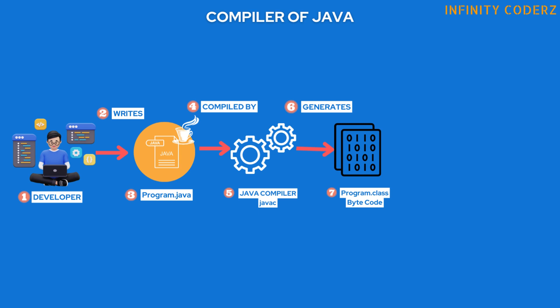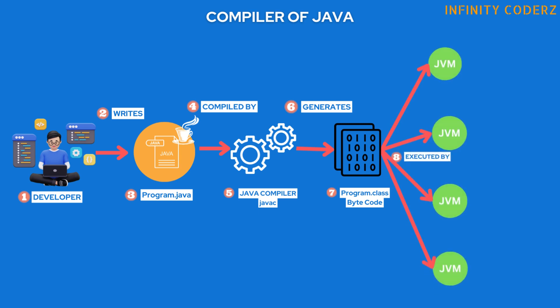The bytecode is saved in class files. The Java Virtual Machine (JVM) verifies the bytecode to ensure its safety and integrity. It checks for any violations of Java's security rules and performs various checks to prevent malicious code from executing. The JVM then executes the compiled Java program — it loads the bytecode into memory, interprets or executes the instructions, manages memory, performs garbage collection, and provides various runtime services to the Java program.